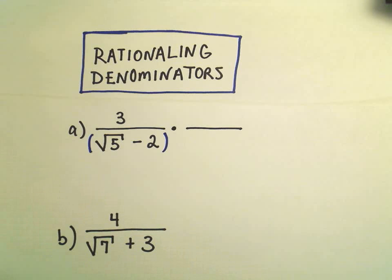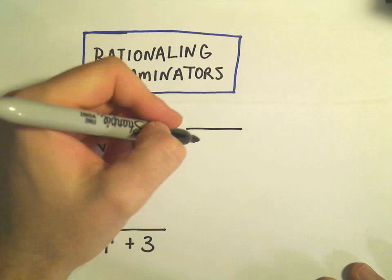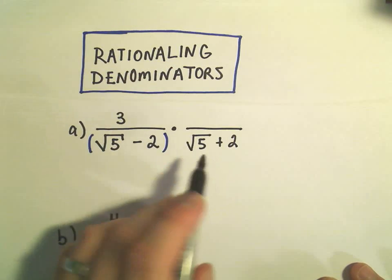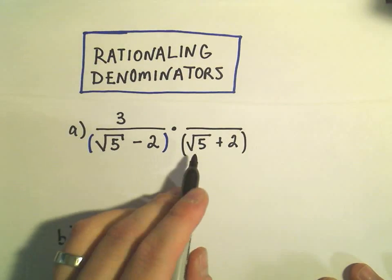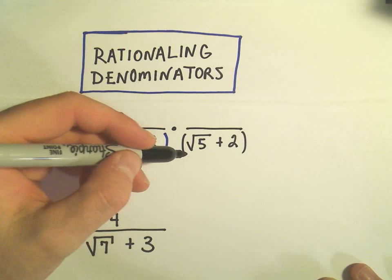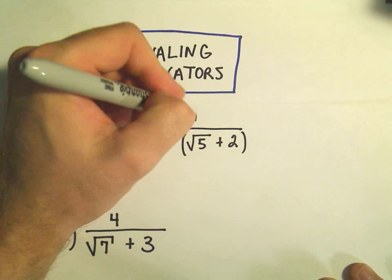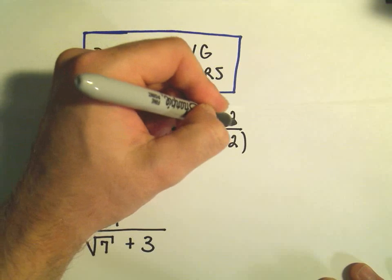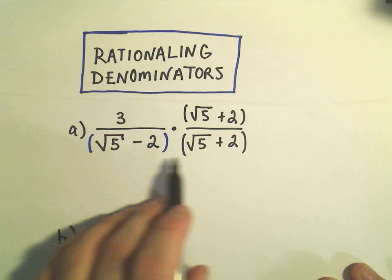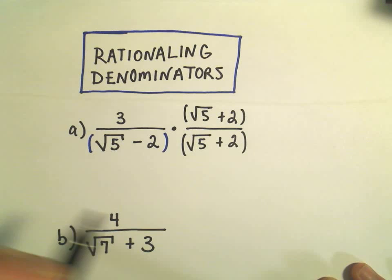So in this case, since it's negative, we're going to make it into a positive. So I'm going to take root 5 plus 2, and since I multiplied the denominator of the fraction by that, I'm also going to have to do it to the numerator. And just algebraically, this is the trick that's going to get rid of the radicals in the denominator. We will end up still having radicals in the numerator, but that's okay.